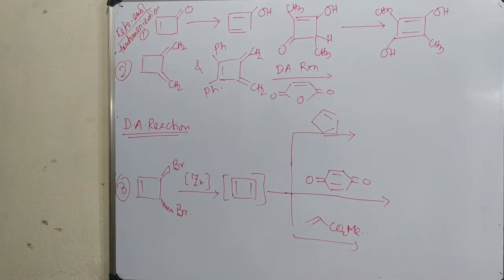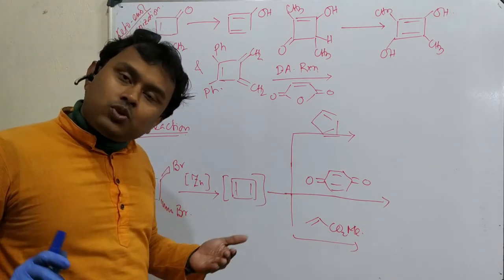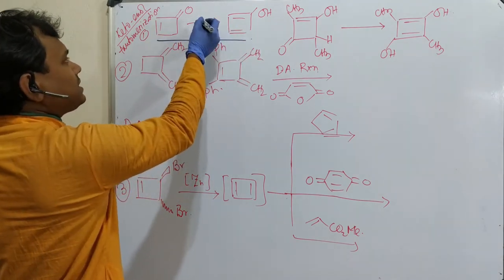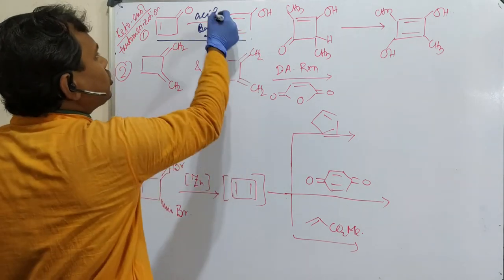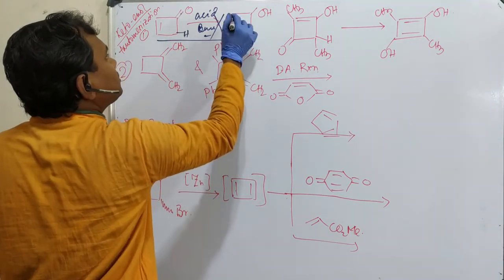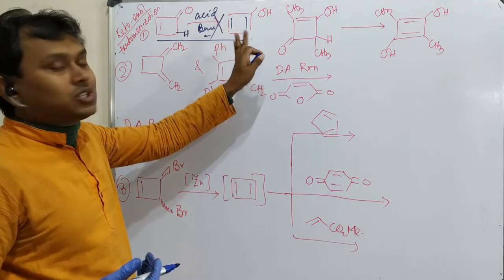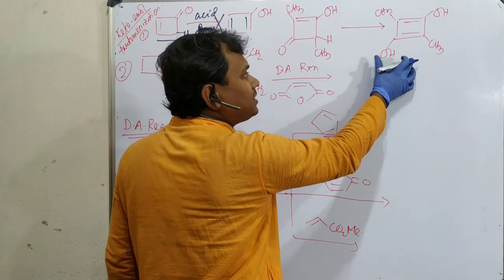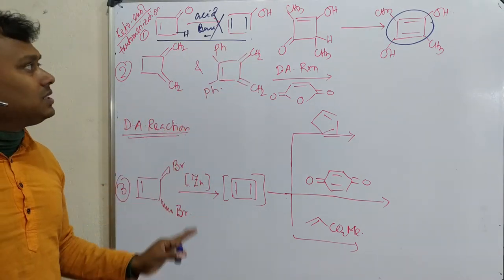Let's discuss some properties related to cyclobutadiene and anti-aromaticity. Consider a keto compound: the keto-enol tautomerization does not happen for cyclobutadiene derivatives. The corresponding enol involves losing a hydrogen to produce a cyclobutadiene ring, which is anti-aromatic. Therefore this tautomerization does not happen. Cyclobutadiene prefers to remain in the keto form rather than the enol form because the enol would be anti-aromatic.